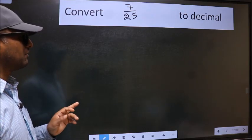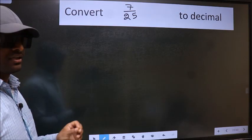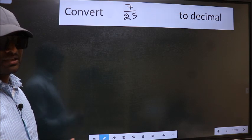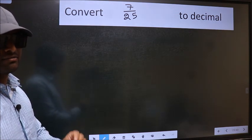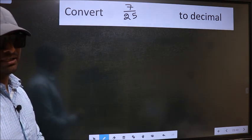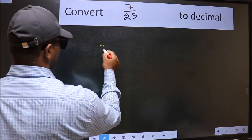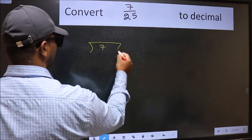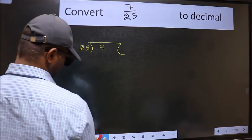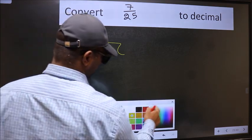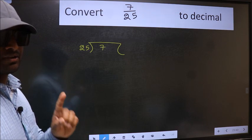Convert 7 by 25 to decimal. To convert to decimal, we should divide it. To divide, we should frame it in this way: 7 here and 25 here. This is your step 1.